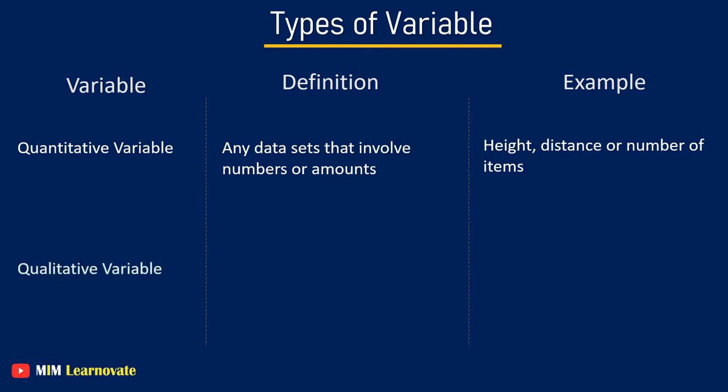Qualitative variable. Qualitative or categorical variables are non-numerical values or groupings. Examples might include eye or hair color.